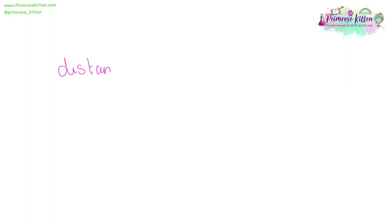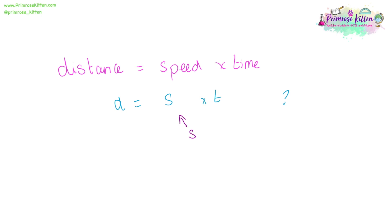You might think you're not going to get marks for remembering equations this year because you get given a formula sheet, but selecting the correct equation is still a skill that you can get marks for. One of the really important things the examiners have told us is that they really want you to write down the equation as it is on the formula sheet. Please don't try to be clever and use letters instead, because this is where people trip up all the time.